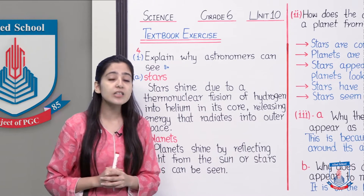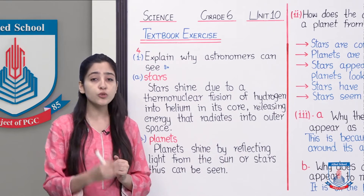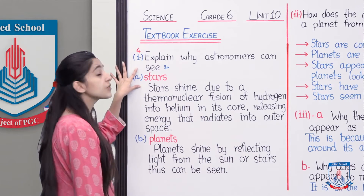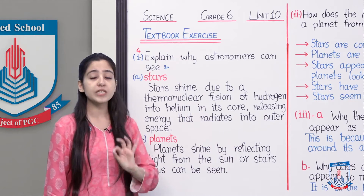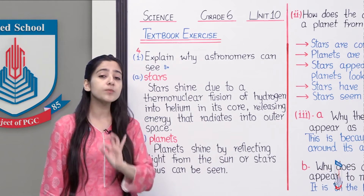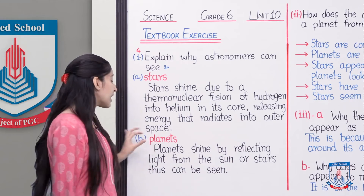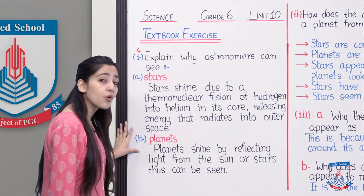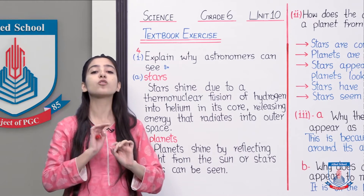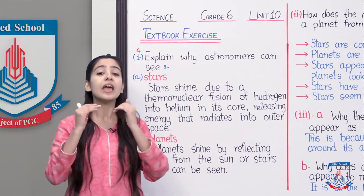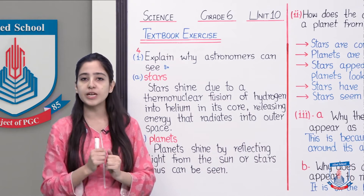Luminous aisa object hota hai jo ke apni light khud produce kar sakta hai. In case of stars, stars are the luminous objects — ye aisa objects hain jo ke apni light khud produce karte hain. Agar dekha jaye planets ko, so planets aisa object hain jo ke apni light khud produce nahi kar sakte. Ye apni light lete hain from the luminous objects.